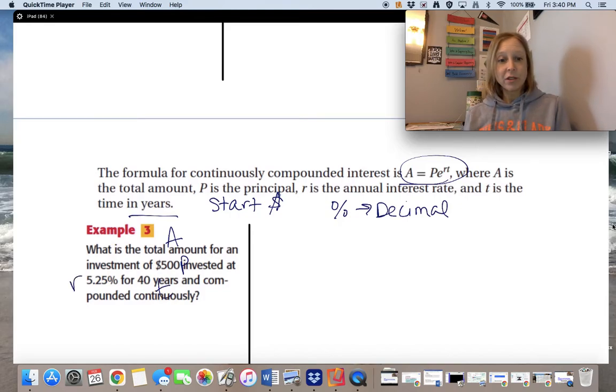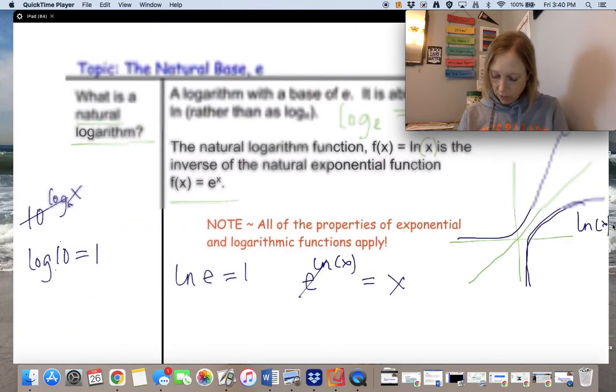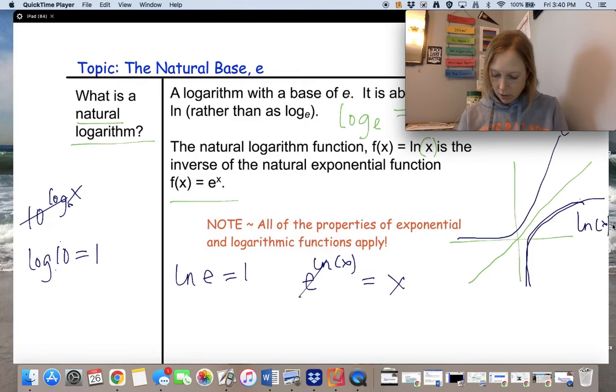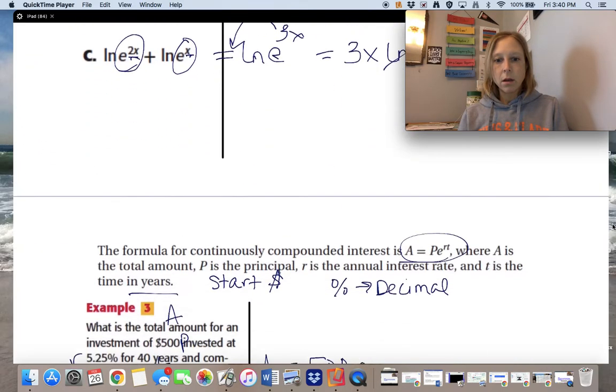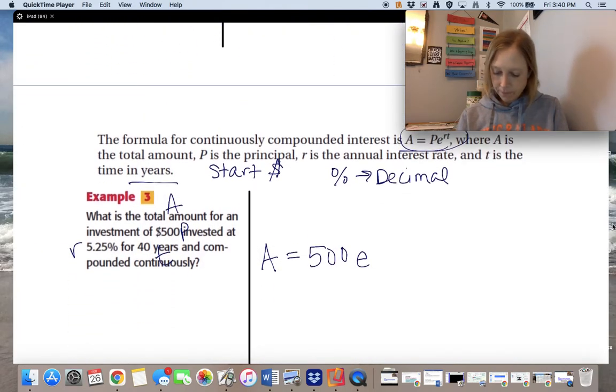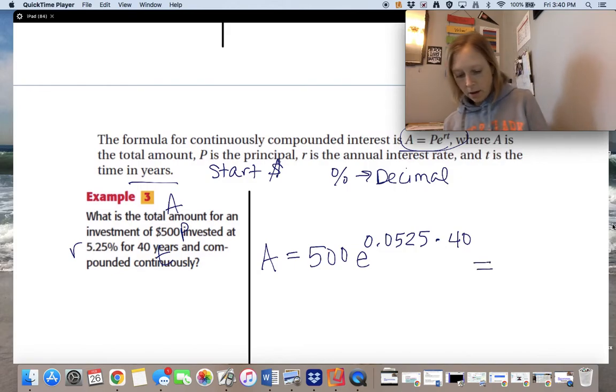Remember E is just a number. So we have just a whole bunch of numbers we're going to work with, and then we'll figure out what that total amount is. All right. 500 E. And remember, change that to a decimal. 0.0525 times the number of years, 40.